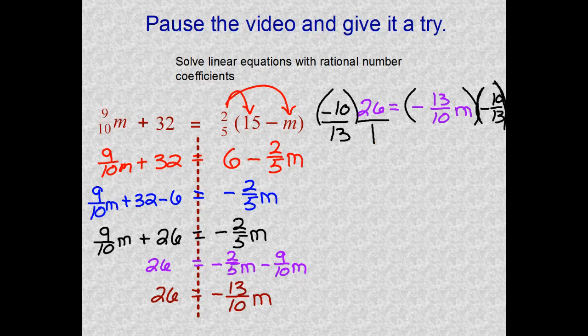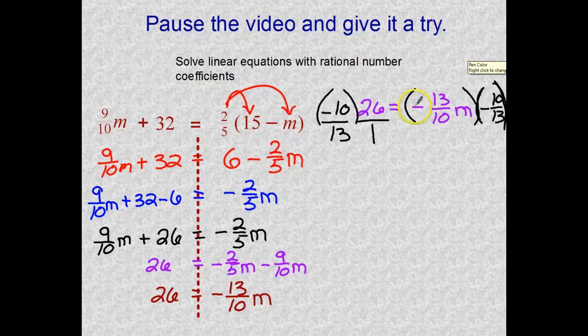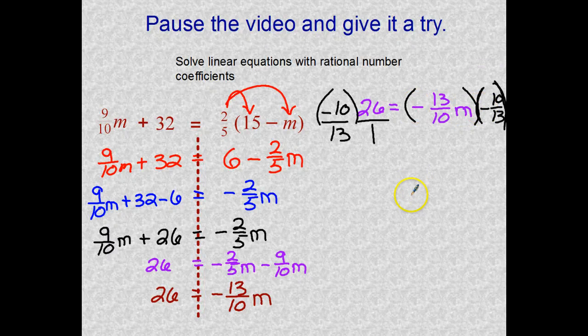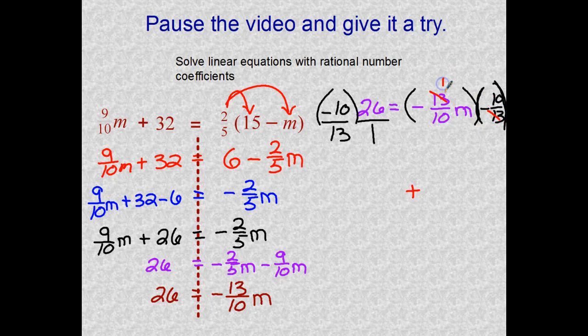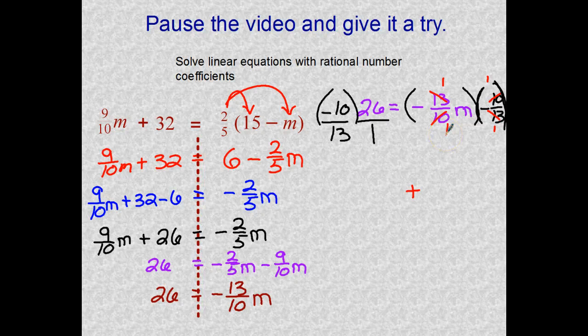Let's do some canceling here. The negative times a negative equals a positive—we know that. The thirteens cancel to ones. The tens cancel to ones. What am I left with? I'm left with positive one M. On the left side, a little extra work here.